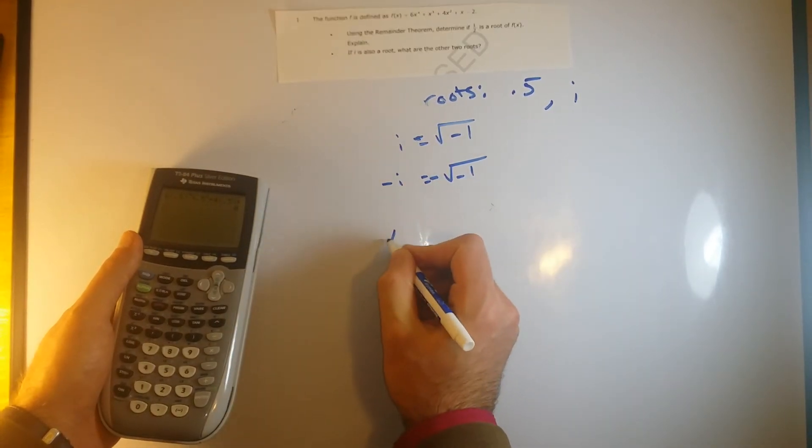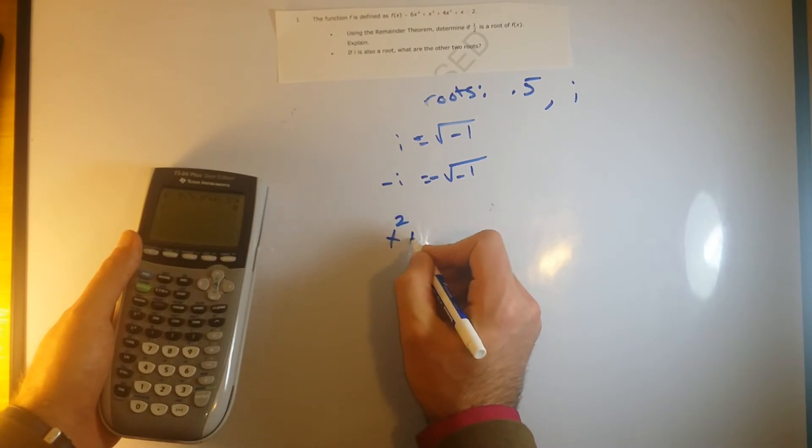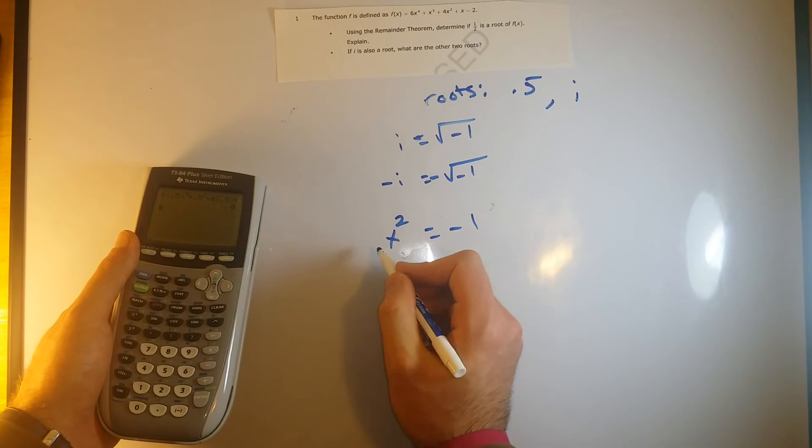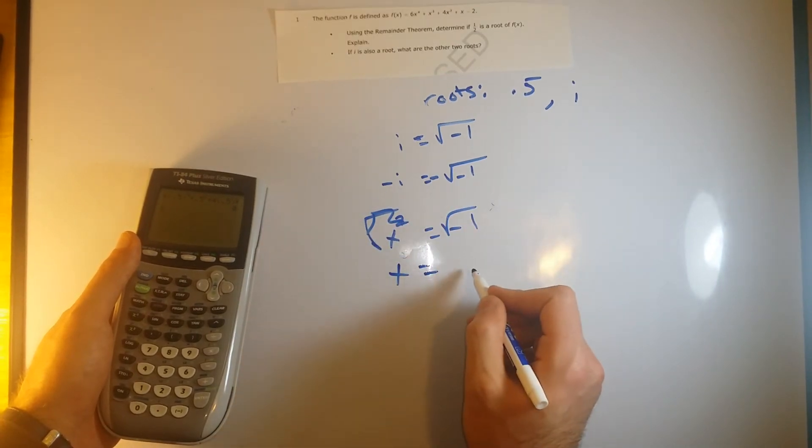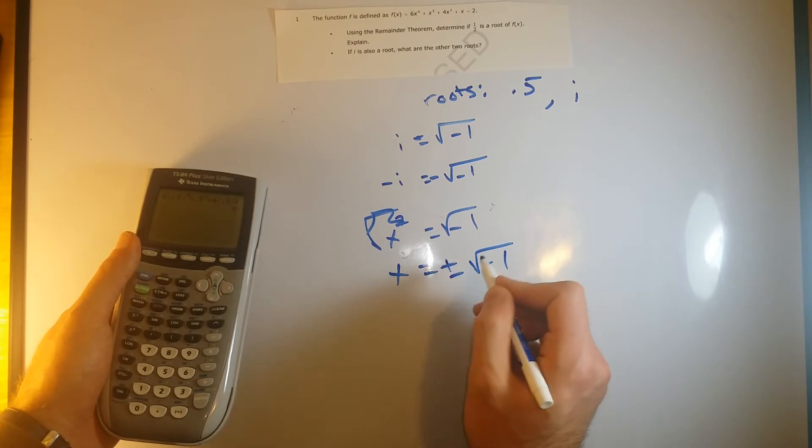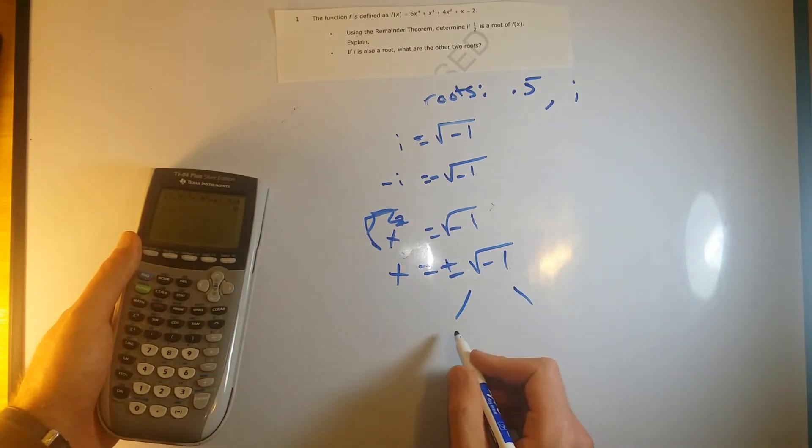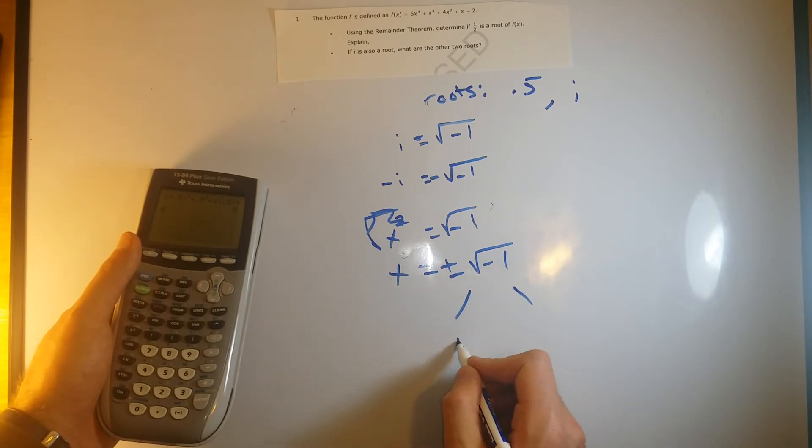Just an example, so the way that you get to i in the first place is you have x squared equals negative 1, and then you take the square root of both sides to cancel out these, you get x equals plus or minus the square root of negative 1.